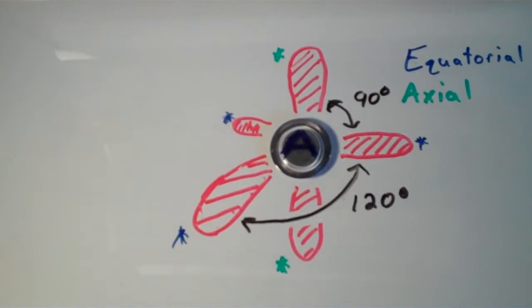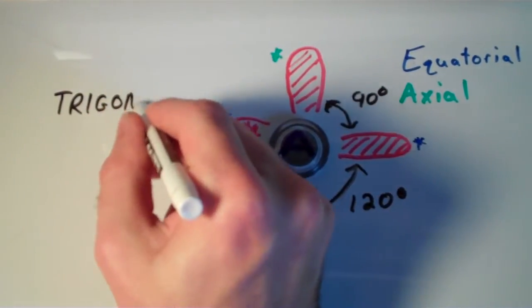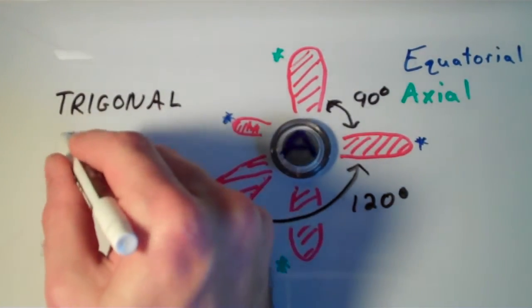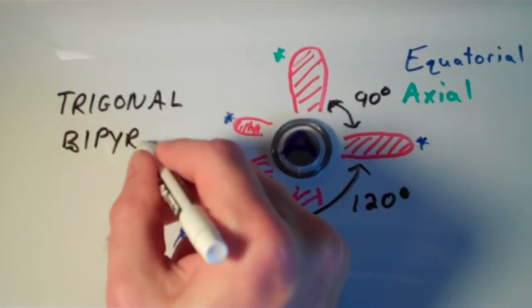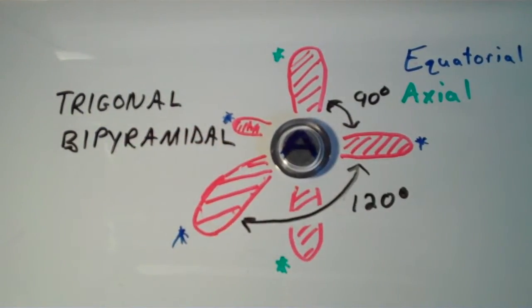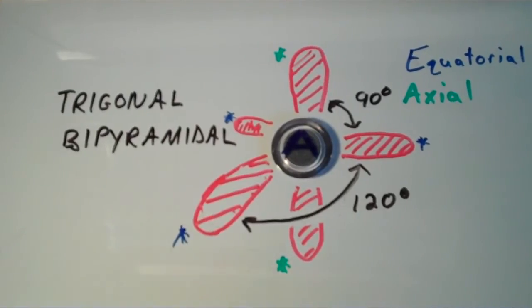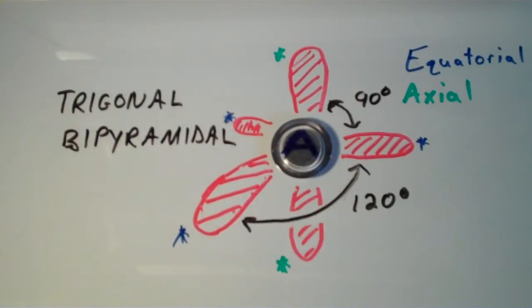This shape is what we call trigonal bipyramidal. Trigonal meaning three-sided, bipyramid meaning two pyramids. Basically you have two pyramids that share the same three-sided face. So trigonal bipyramidal, five electron pairs.